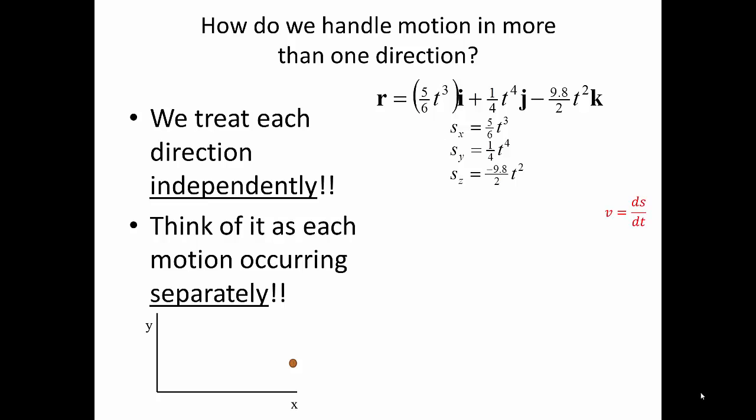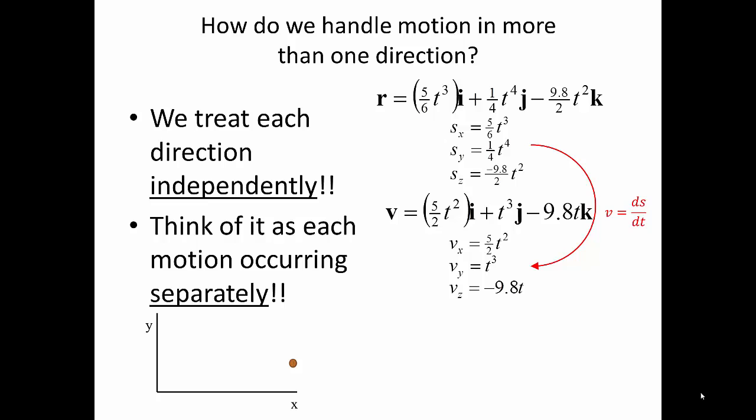If we want to know the velocity, we know it is defined by ds/dt. Taking the derivative of each position component with respect to time gives the velocity in each direction. The velocity in the x direction becomes 5/2·t², the velocity in the y direction becomes t³, and the velocity in the z direction becomes -9.8t. We can then write our velocity vector.